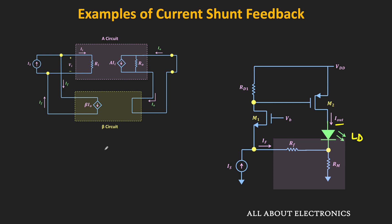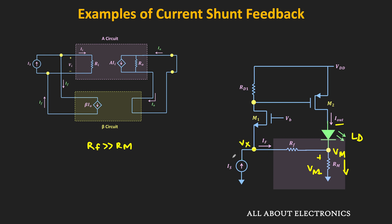Now let us understand how these two resistors sample the output current and provide the feedback current to the input side. Whenever RF is much greater than RM, most of the output current will flow through RM, and there will be a voltage drop Vm across RM. The voltage at this node is Vm, and the voltage at the other node is Vx. So the feedback current IEF equals Vx minus Vm divided by RF. Since Vm is proportional to the output current, the feedback current IEF is also proportional to the output current.